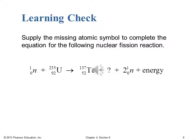Let's pause here and check your understanding of nuclear fission by having you complete the nuclear equation in this learning check. We have a neutron plus a U-235 nucleus decaying in this case to a technetium-137 nucleus plus another nucleus plus two neutrons and lots of energy. Your challenge is to figure out what that missing nucleus is. Go ahead and pause the video, and once you've determined the identity, start back up and we'll see how you did.